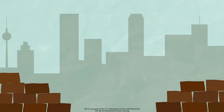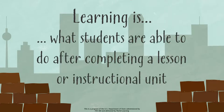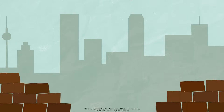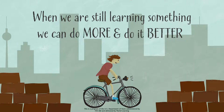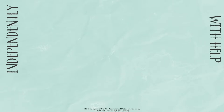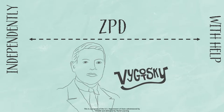As we saw in the activities about learning objectives, we describe learning by saying what students are able to do after completing a lesson or instructional unit. In other words, learning means being able to do new things. When we are still learning something, we can do more and do it better when helped by someone more capable and knowledgeable — a teacher, parent, or more knowledgeable peer. The difference between what a learner can do by him or herself and what he or she can do with help is called the Zone of Proximal Development, often shortened to ZPD. Vygotsky is the thinker who originally coined this term.